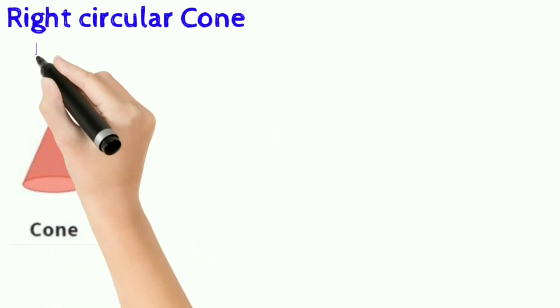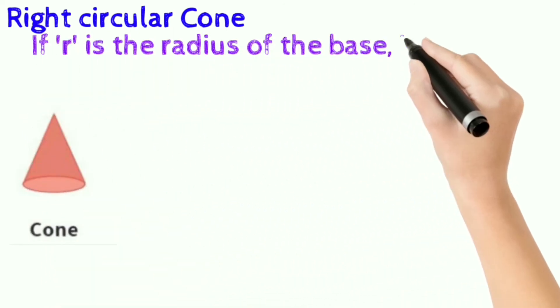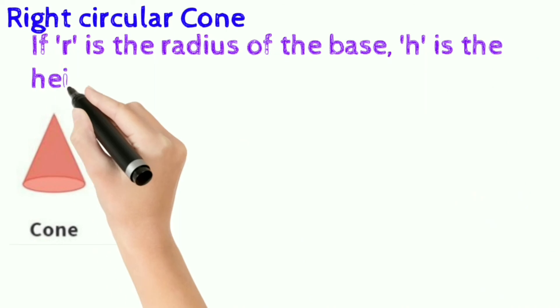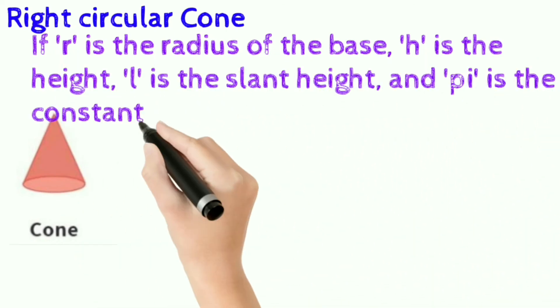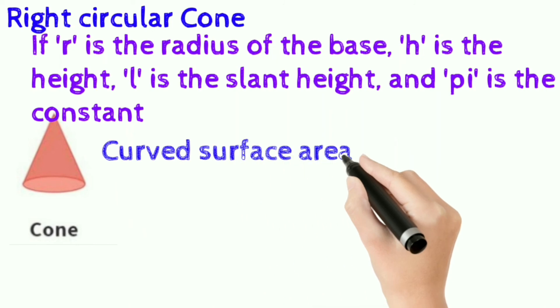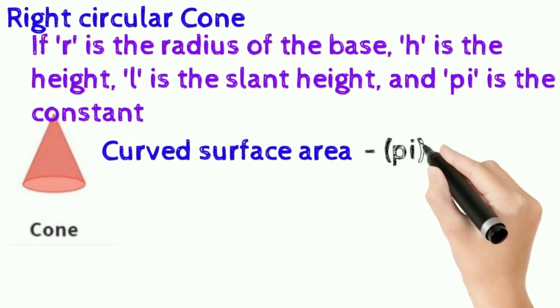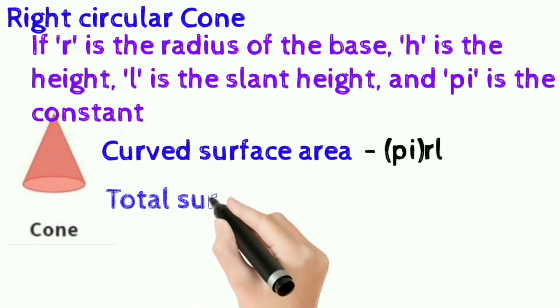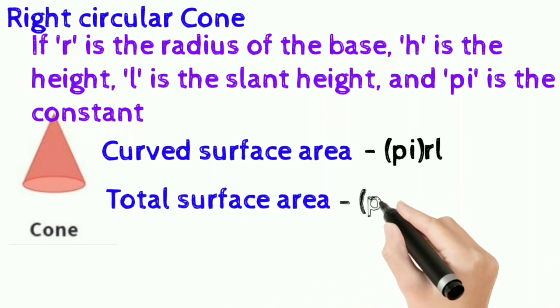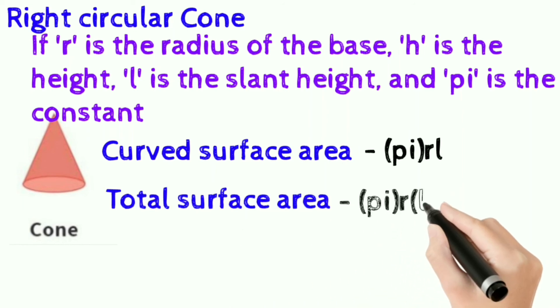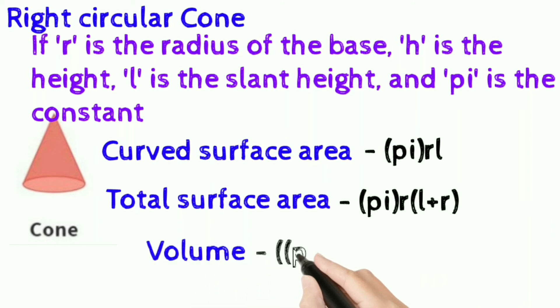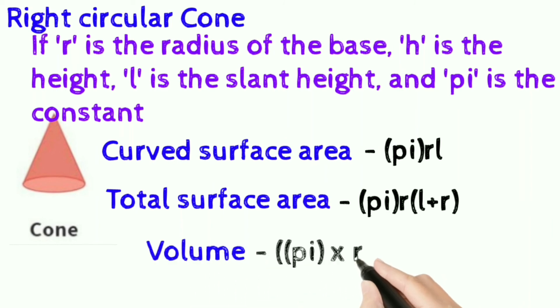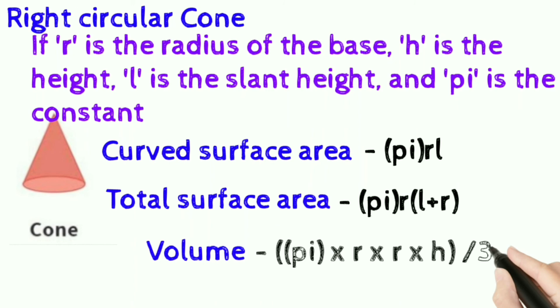Right circular cone: if r is the radius of the base, h is the height, l is the slant height, and pi is the constant, curved surface area is π into rl; total surface area is π into r into (l plus r); and volume of the cone is πr squared into h divided by 3.